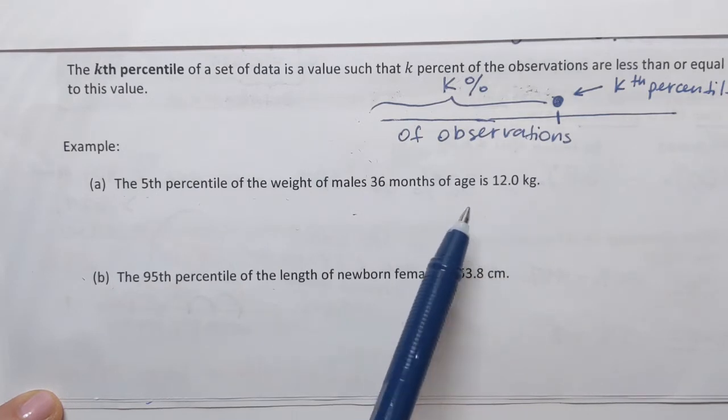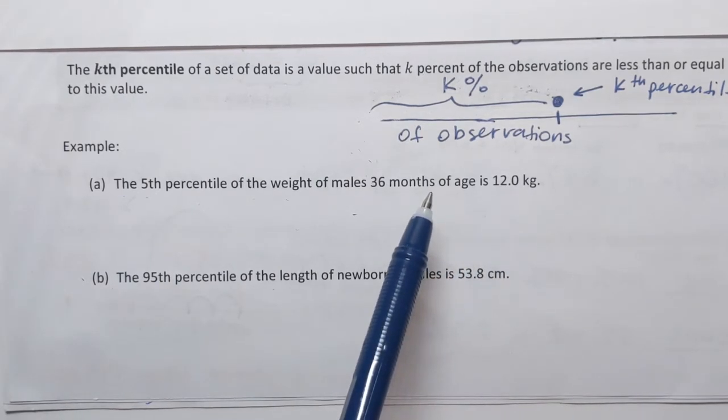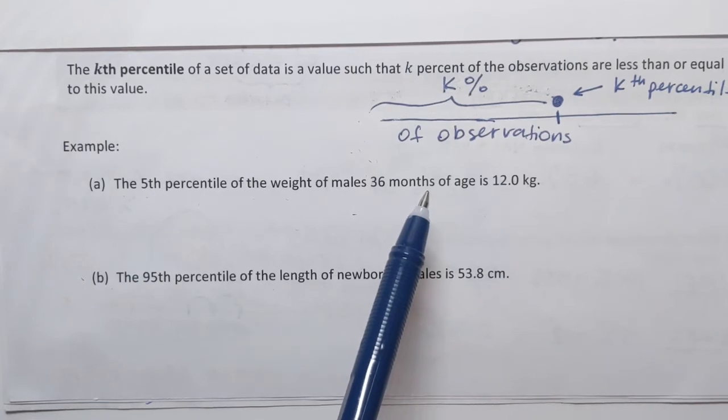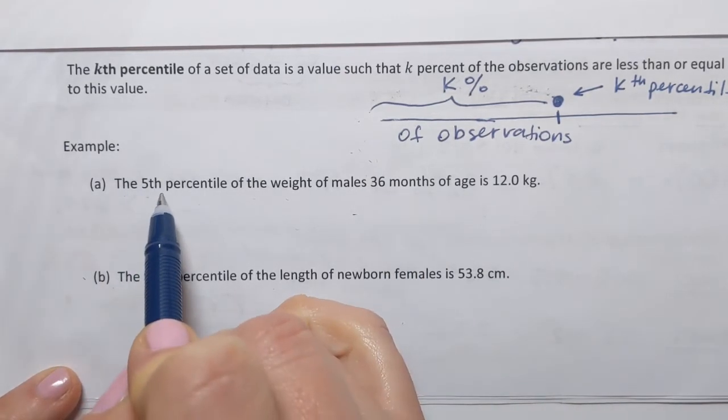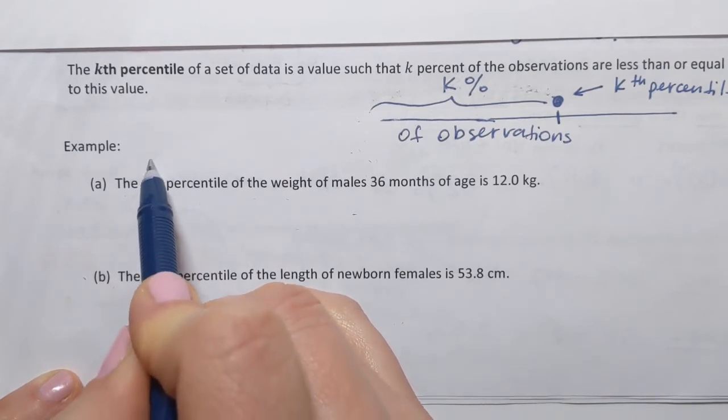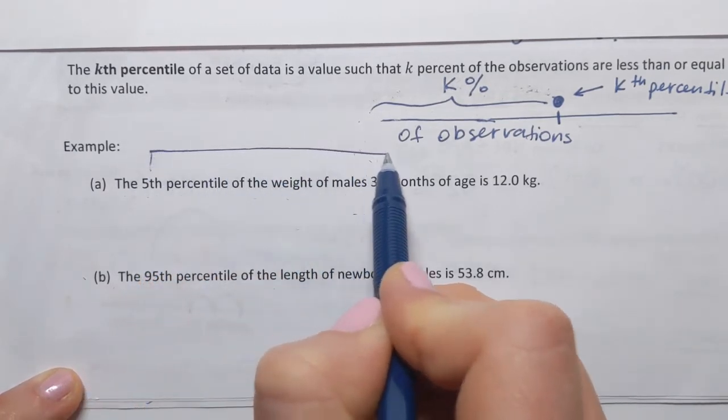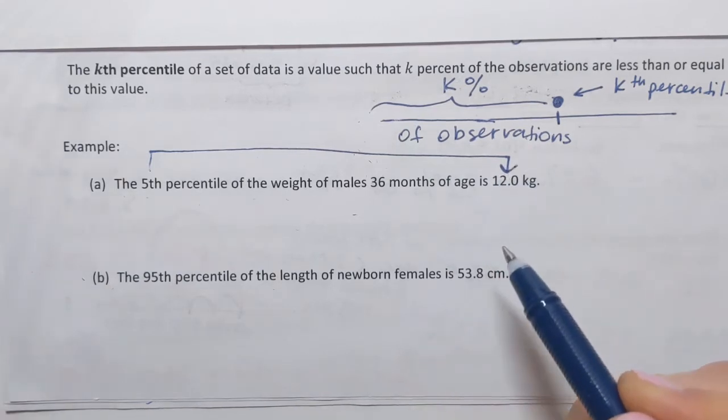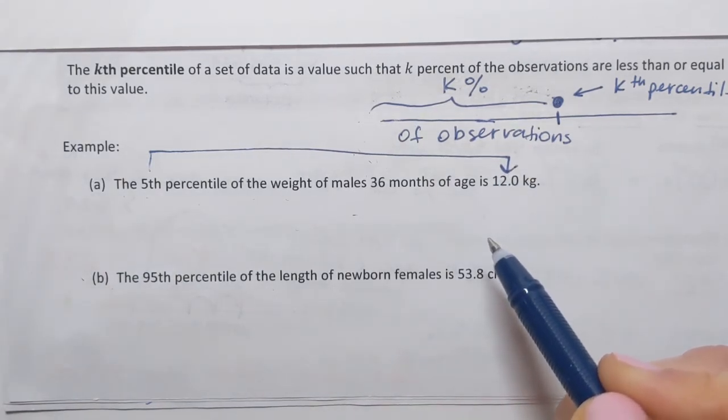So once again when I say percentile it's the measure of position so it's always associated with specific data value and in this case the fifth percentile is associated with this weight, 12 kilos. What does this mean?